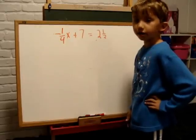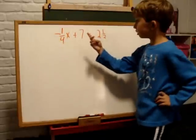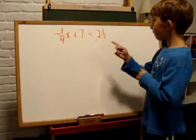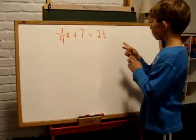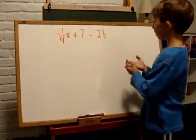Hi, everybody. Here's another math equation: negative 1 fourth x plus 7 equals 2 and a half.